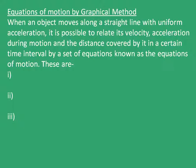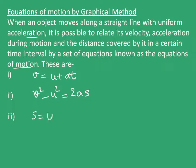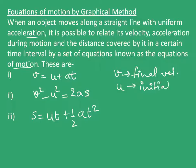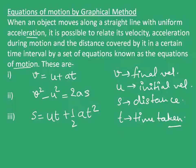Now we will look at the equations of motion by graphical method. When an object moves along a straight line with uniform acceleration, its velocity, acceleration, and distance covered can be related by a set of equations known as the equations of motion. These are: V = U + AT; V² − U² = 2AS; and S = UT + ½AT², where V is final velocity, U is initial velocity, S is distance traveled, T is time taken, and A is acceleration.